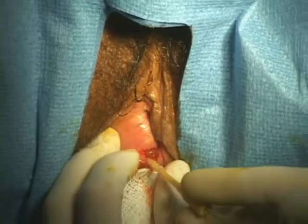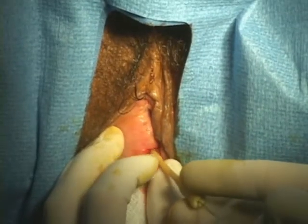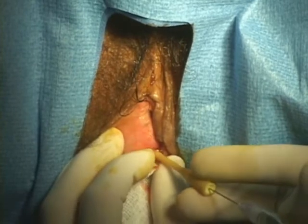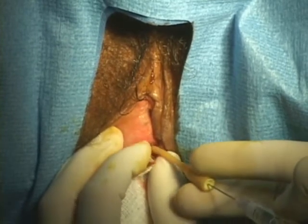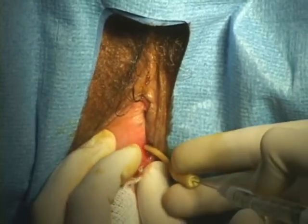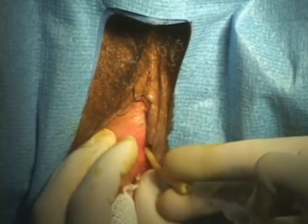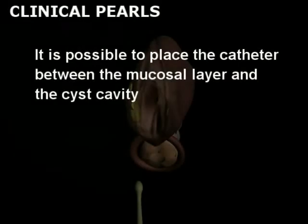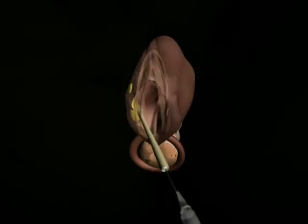With the balloon deflated and the catheter attached to the syringe, insert the tip of the catheter into the cyst cavity. Holding the incision open with a hemostat can aid in proper placement of the catheter. It is possible to place the catheter between the mucosal layer and the cyst if the insertion is not done correctly, which will not properly drain the cyst.